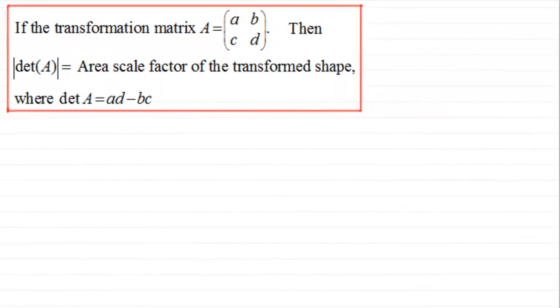Hi. Now I want to introduce you to a concept where if we have a transformation matrix A—let's say it's A, B, C, D—then the magnitude or modulus of the determinant of A under a linear transformation is equal to the area scale factor of the transformed shape, where the determinant of A, det A for short, is equal to A times D minus B times C.